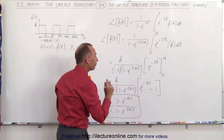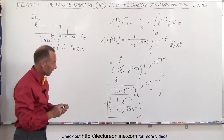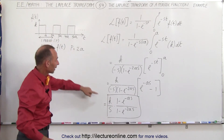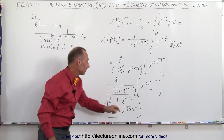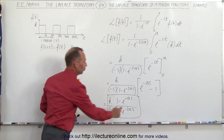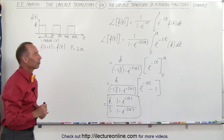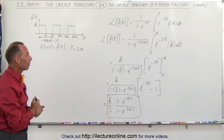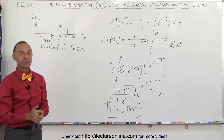And this is the Laplace transform of that particular periodic function. Notice k is simply the height of the pulses, a is the width of the pulse, and 2a is the period of the function. That's the result — the Laplace transform for this particular example, and that's how it's done.